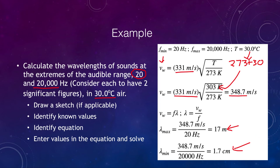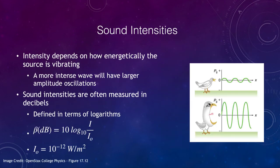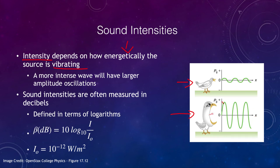Now let's look at the intensity of sound — how do we measure it? Intensity depends on how energetically the source is vibrating. A bird singing quietly produces a low-amplitude wave, while a bird making a very loud noise produces a very high-amplitude wave. Notice the frequency is still the same; it is the amplitude that tells us about the intensity. The intensity is determined by the amplitude of the wave.